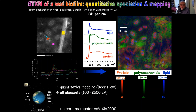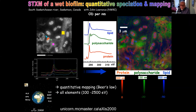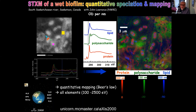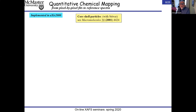On a beamline like the one at the Canadian Light Source, which runs from about 100 to 2500 eV, you can cover almost all elements of the periodic table since there is a core edge for essentially everything.